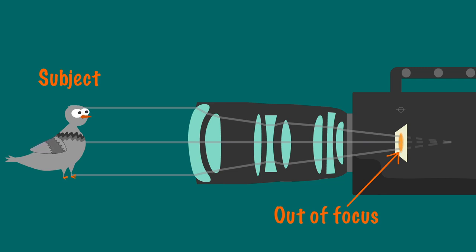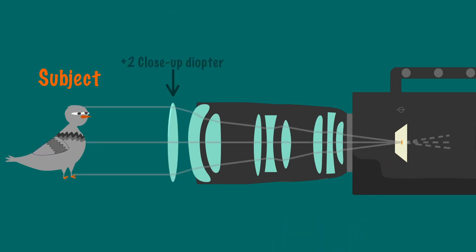To bring it back in, we attach this convex plus two close-up diopter to the lens. Now the subject is in focus, and you haven't compromised your shot.